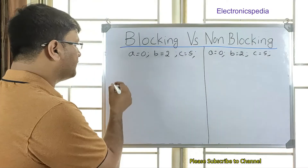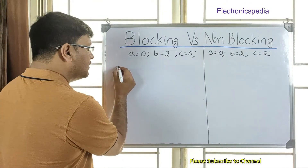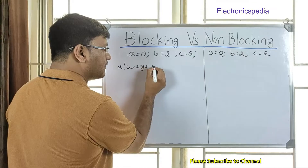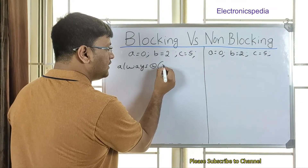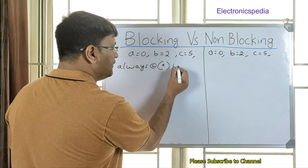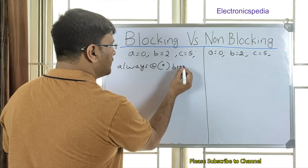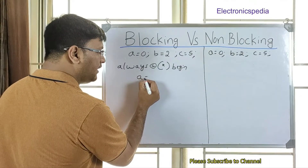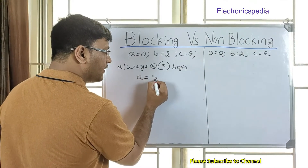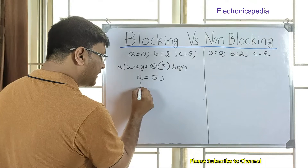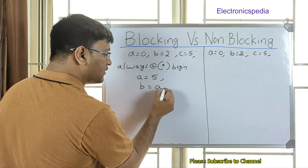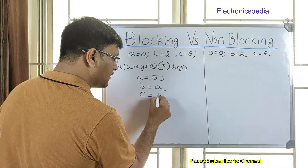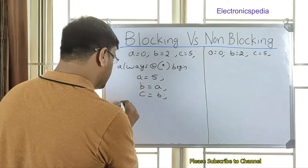Assume we have an always block: always @(*) begin. Inside it, A is assigned the value 5, B is assigned the value of A, and C is assigned the value of B. End. This is the blocking version.